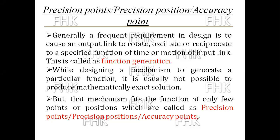Generally, a frequent requirement in design is to cause an output link to rotate, oscillate, or reciprocate to a specified function of time or motion of the input link. This is called function generation, as we learned in the previous session. While designing a mechanism to generate a particular function, it is usually not possible to produce a mathematically exact solution, but the mechanism fulfills the function at only a few points or positions, which are called precision points, precision positions, or accuracy points.